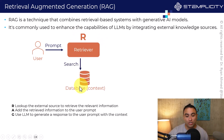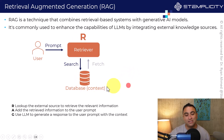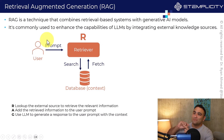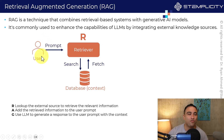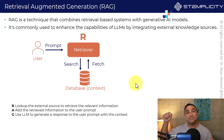The retriever is going to search the database — which includes documents specific to your company — and then fetch specific relevant information. This is the first step in RAG, which is the R term, or retrieval. Instead of taking a prompt and sending it directly to the model, we first check an external database to look up and retrieve the relevant information.